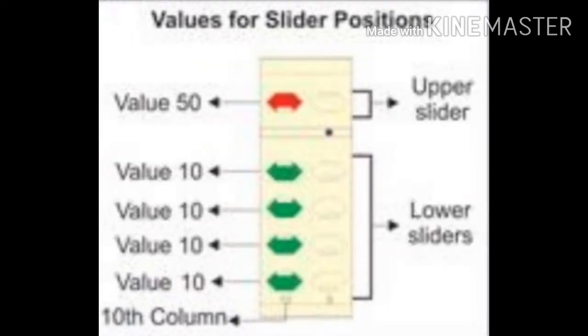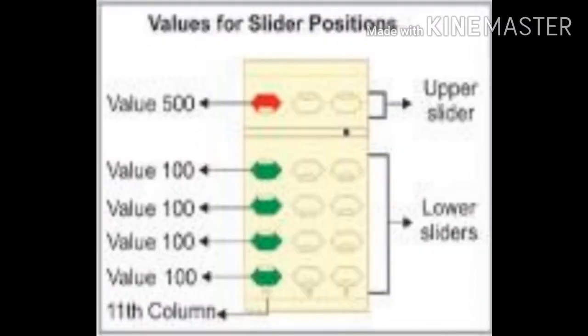As you can see very clearly, the second rod is called the tens rod, which is just beside the unit rod. The upper bead has the value 50 and the lower bead has the value 10. The next is the hundreds rod, just beside the tens rod. The upper bead value is 500 and the lower bead value is 100.